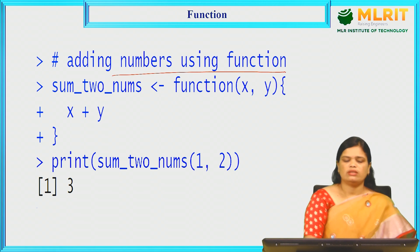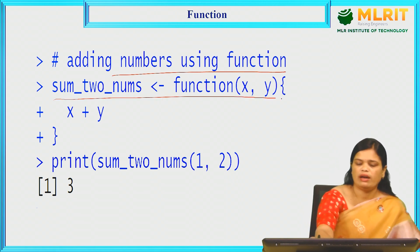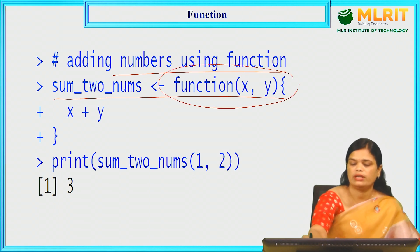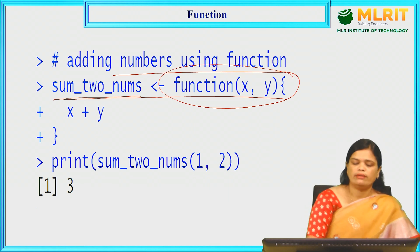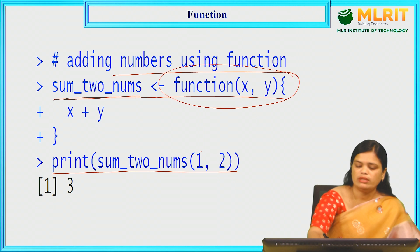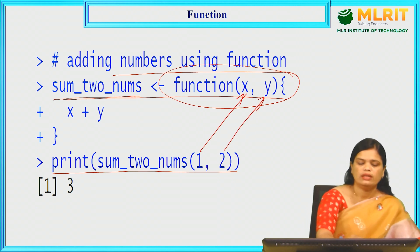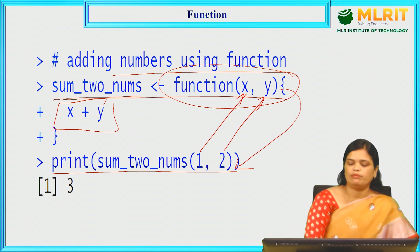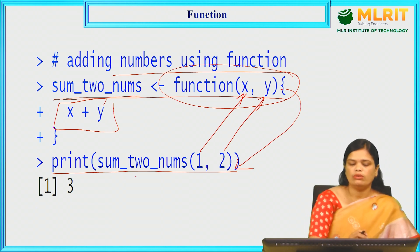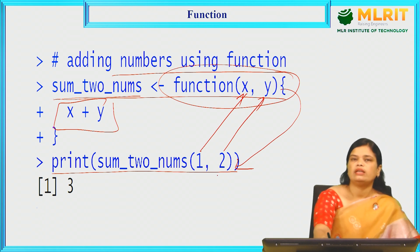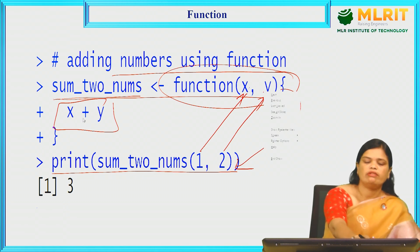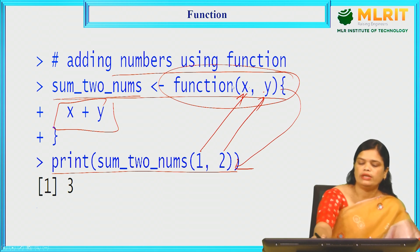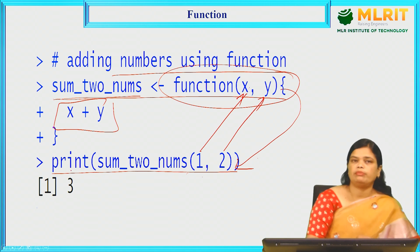Adding numbers using a function — here we are having a variable and we are assigning a function with parameters x and y to a 'sum_two_numbers' variable. We are passing the two elements 1 and 2 into x and y. This x and y will be summed, and the function will return to the same point where it left. This function is within the print function, so it will directly print the value, giving output as 3.